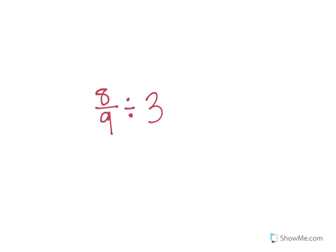First thing I need is I need it all to be fractions. So how can I make that three a fraction? I can put a one underneath it. So I'm now going to have eight-ninths divided by three over one.